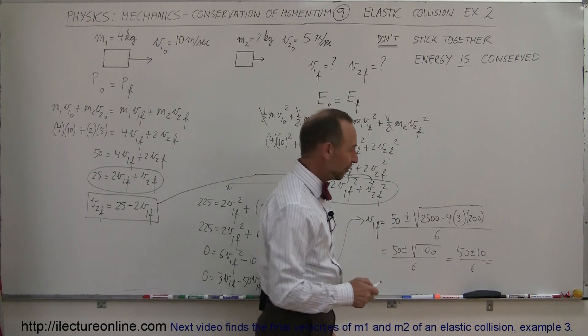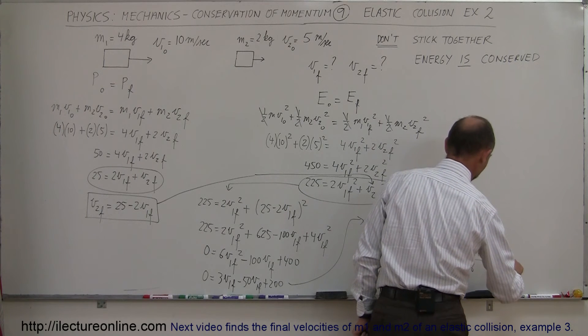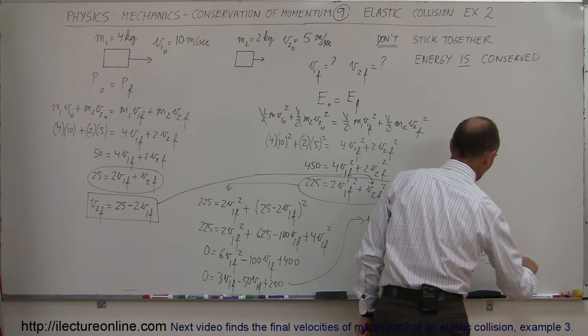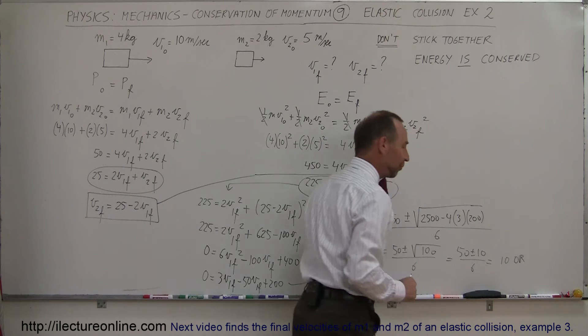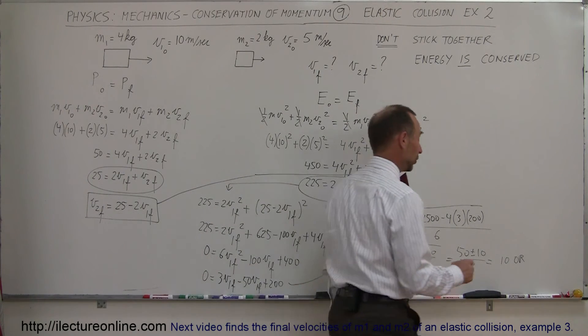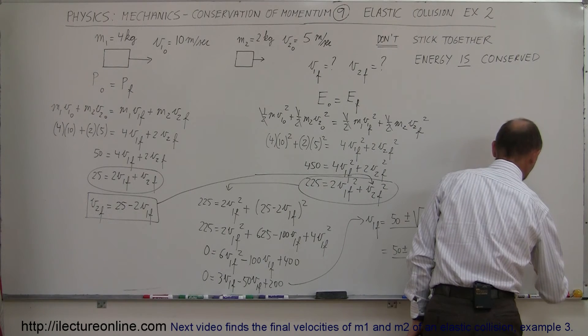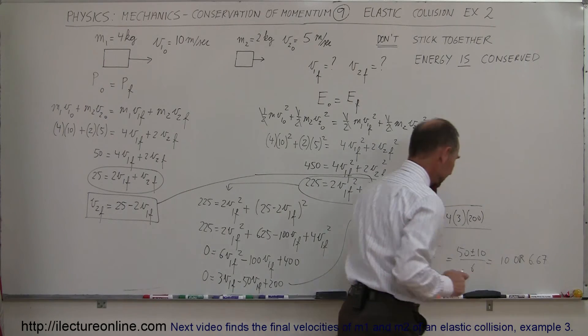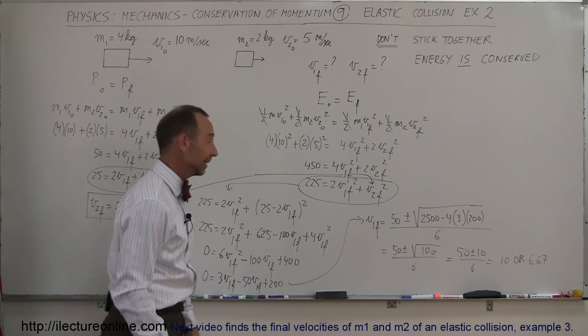So if I add the two together, 50 plus 10, I get 60 divided by 6, which is equal to 10. Or, if I subtract, I get 40 divided by 6, which is 6 and 2 thirds, that would be 6.67. So we have two possible answers for V1. I didn't even need my calculator.